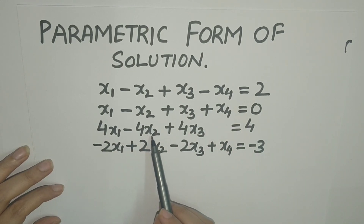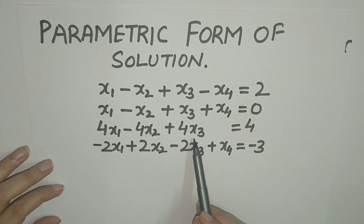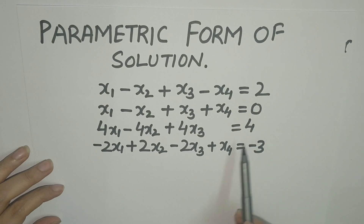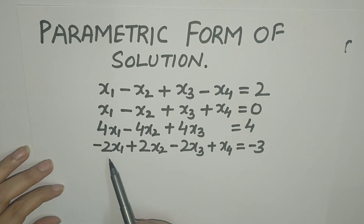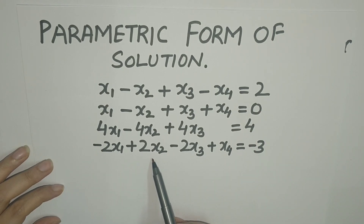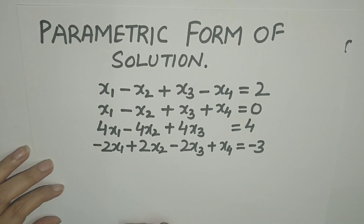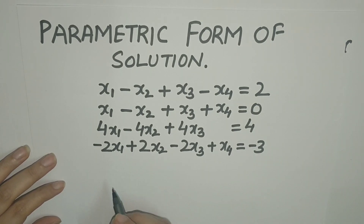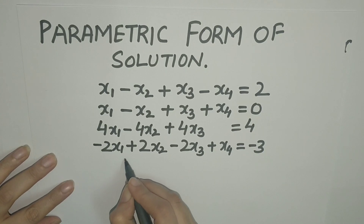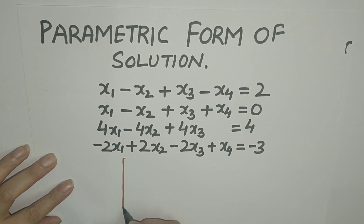The concept of basic and non-basic variables is used to describe the solution set of a consistent system with infinitely many solutions. Let us now describe how to express a solution in parametric form using the concept of basic variables and free variables. Consider the system: x1 - x2 + x3 - x4 = 2, x1 - x2 + x3 + x4 = 0, 4x1 - 4x2 + 4x3 = 4, and -2x1 + 2x2 - 2x3 + x4 = -3.